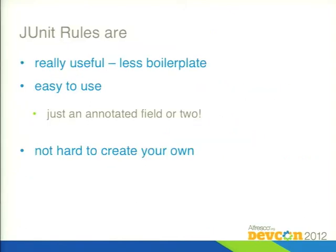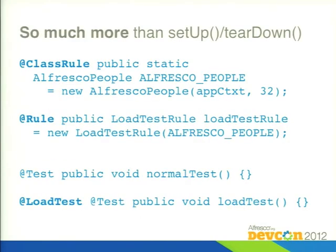JUnit rules are really, really useful - I can't believe they're not more generally used. They just remove lots of boilerplate from test code. They're really easy to use, just a couple of fields with a couple of annotations. It's also not hard to create your own. I don't want to give the impression they are only an alternative idiom for setup and teardown, because they're absolutely not - they're far more powerful than that.